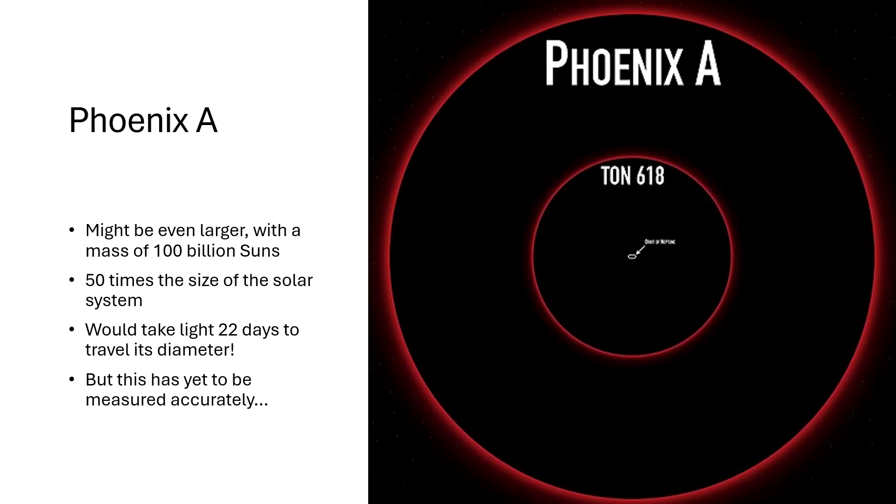Phoenix A might be even more massive, up to 100 billion suns, 50 times the size of the solar system, so big that light would take 22 days to cross from one side to the other if it was passing across the diameter of Phoenix A. Essentially about double the diameter of TON 618 and about double the mass, maybe a little bit less than double the mass.